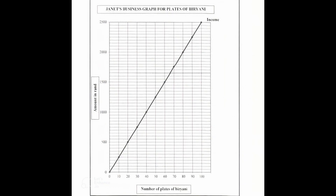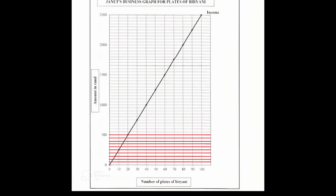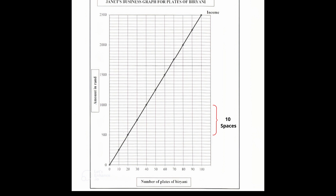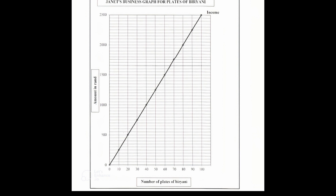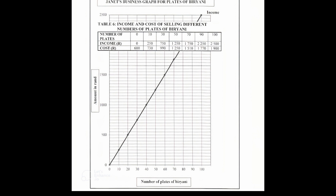On the graph, the amount in rand is on the y-axis. Each horizontal line represents 50 rand, as there are 10 spaces between 0 and 500, and between 500 and 1000, and so on. The number of plates of biryani is on the x-axis, and each vertical line represents 10 plates. The income graph is already drawn, and we use the same grid to draw cost versus number of plates using the values in Table 6.